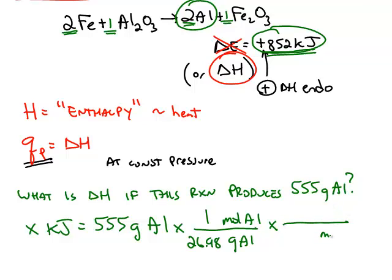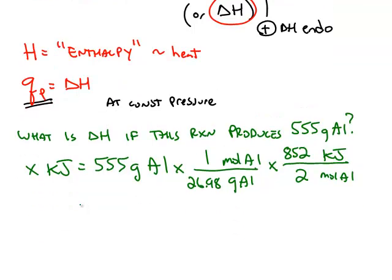And then once we have moles of aluminum, we can turn it into kilojoules of heat using the thermochemical equation. The coefficient for aluminum is a 2, and that requires an input of 852 kilojoules. So multiplying gives us an answer of 8.76 times 10 to the third kilojoules.